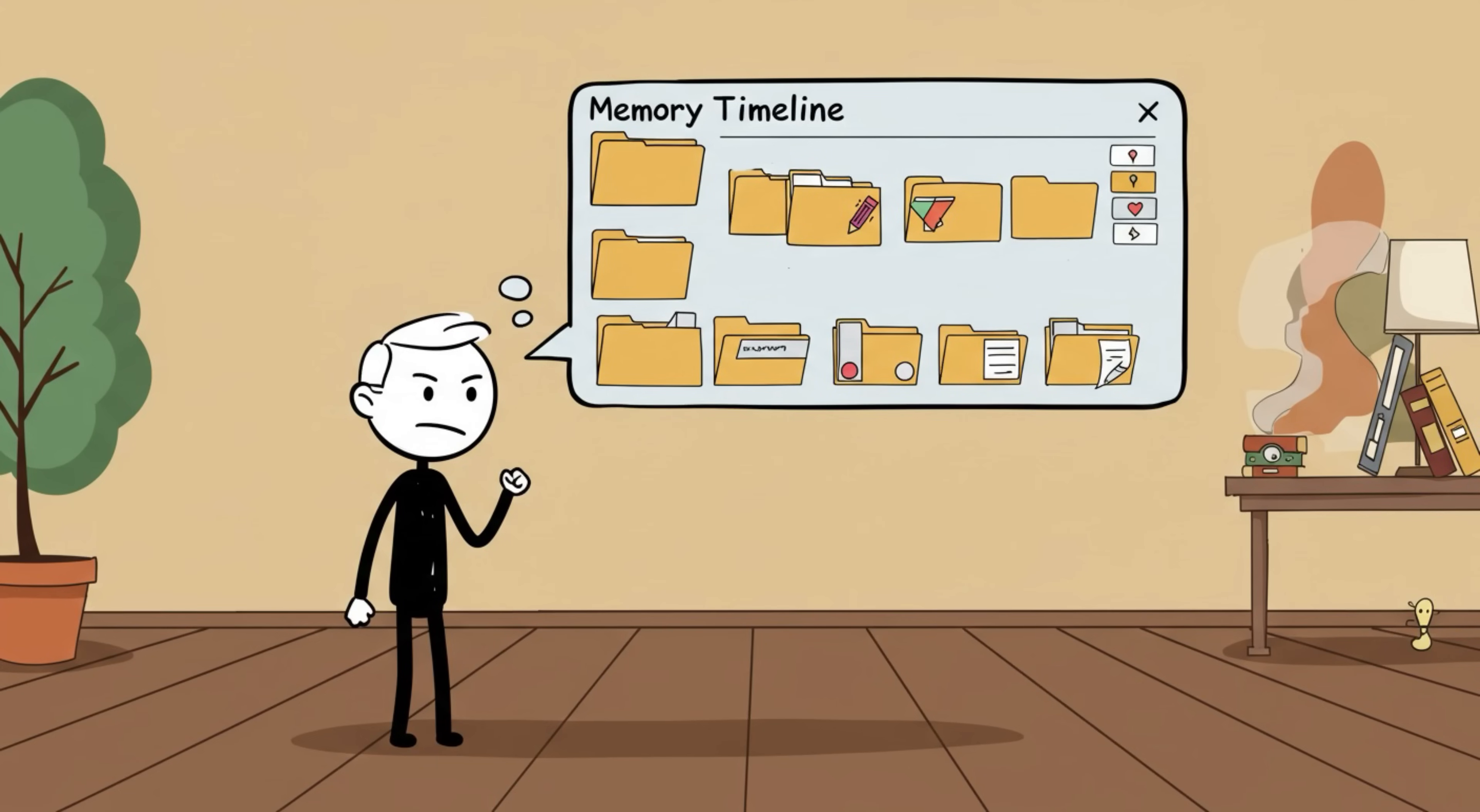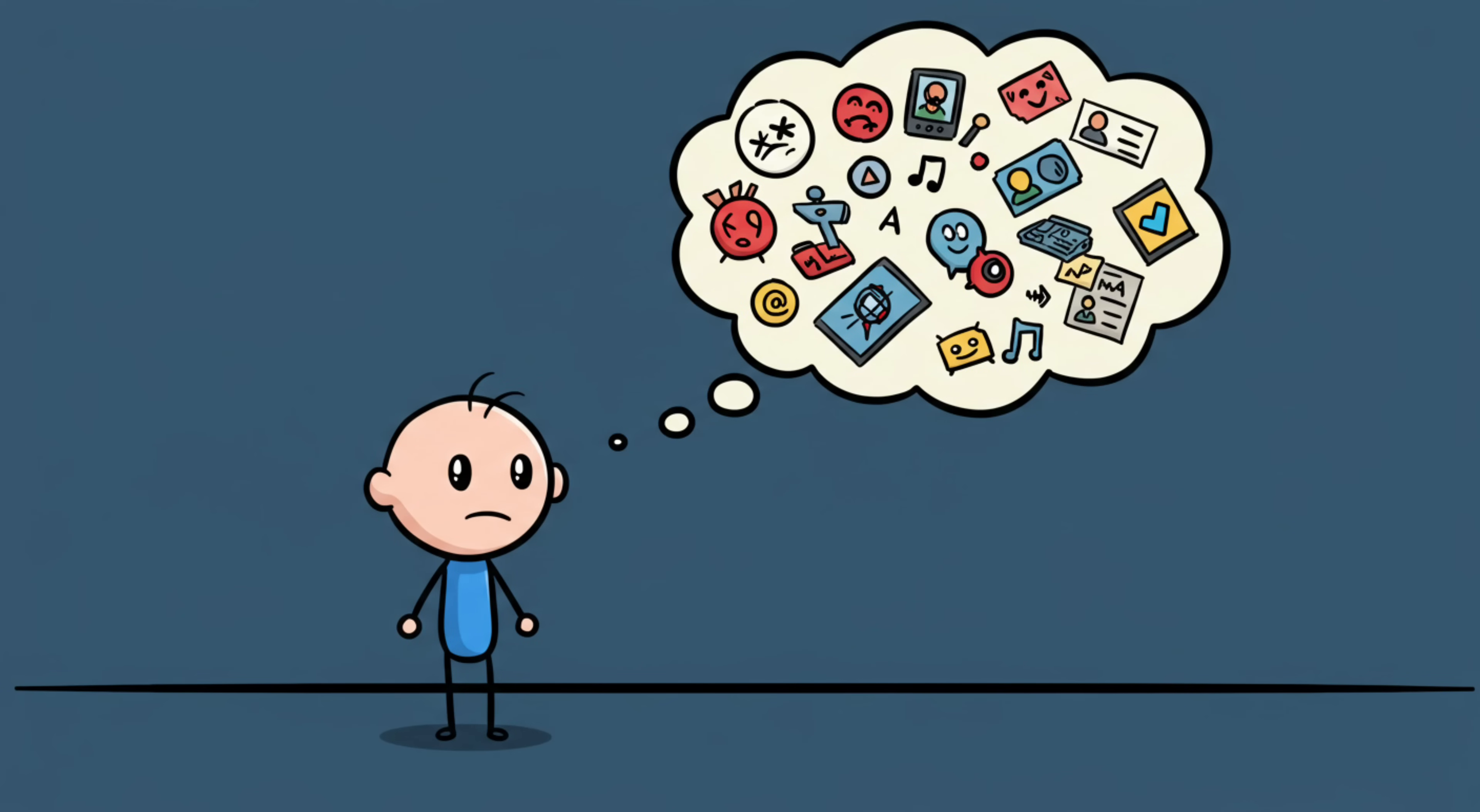Your sense of time as a newborn is about as developed as a goldfish's attention span. Adults remember things in a timeline. What happened first, what happened next, and why it matters. But without that structure, memories just float around disconnected.